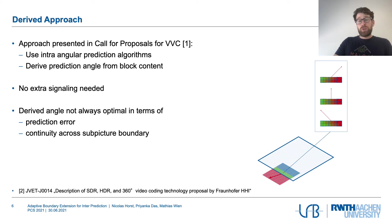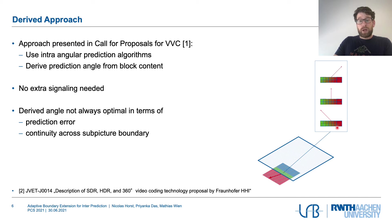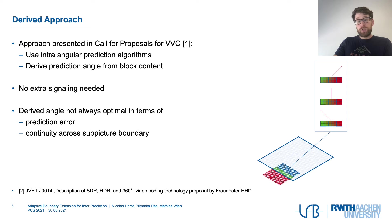One approach to derive those motion vectors was raised in a call for proposal for VVC — proposed by Fraunhofer HHI — which also uses intra angular prediction algorithms and derives the prediction angle from the block content. By checking the correlation of pixels near the boundary, an angle can be derived and applied for boundary extension. This doesn't need extra signaling, but we don't always derive the optimal angle in terms of prediction error or continuity across sub-picture boundaries.